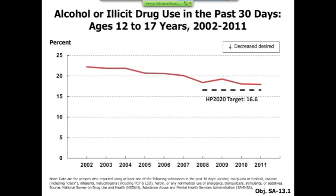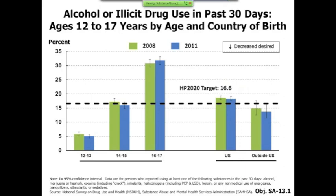This first data slide shows alcohol or illicit drug use in the past 30 days for adolescents ages 12 to 17 from 2002 to 2011. There is some good news: the percentage of adolescents who used alcohol or illicit drugs in the past 30 days decreased by about 24%, from a baseline of 22% in 2002 to about 18% in 2011. We still need to reach the Healthy People 2020 target of 16.6%, with an estimated 4.4 million adolescents currently involved.